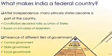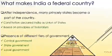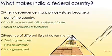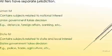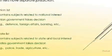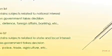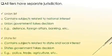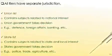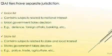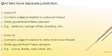Ours is a federal country because we have the presence of different tiers of government. All these tiers of government have their own separate jurisdiction — meaning the area over which someone has legal authority. The jurisdiction of the central government is different from that of the state government.